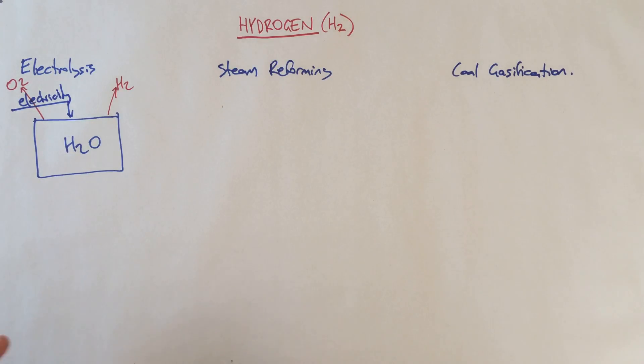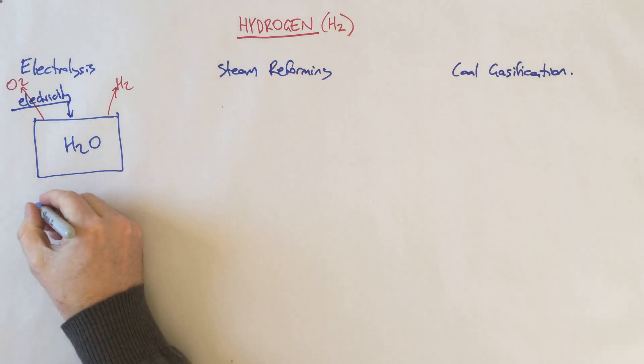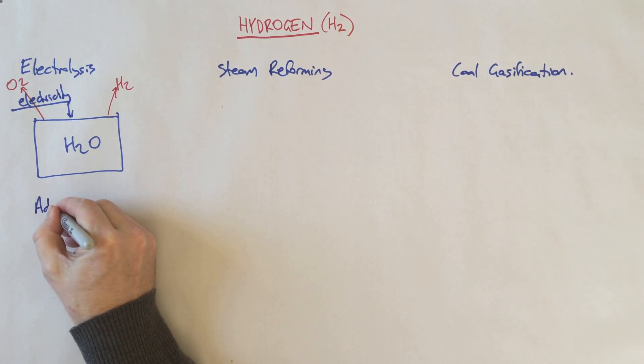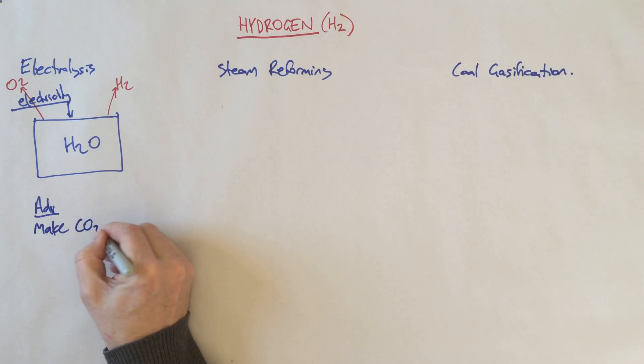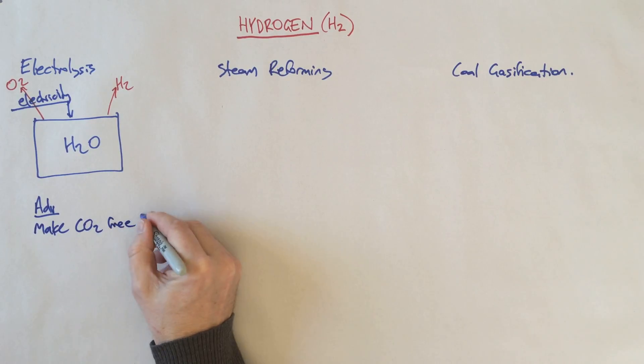This is a relatively clean, simple way of making hydrogen. The advantage is that you can essentially make CO2-free hydrogen, so long as your electricity comes from a source that didn't produce CO2 emissions - let's say from wind or solar power. You can very easily use this process to produce hydrogen.